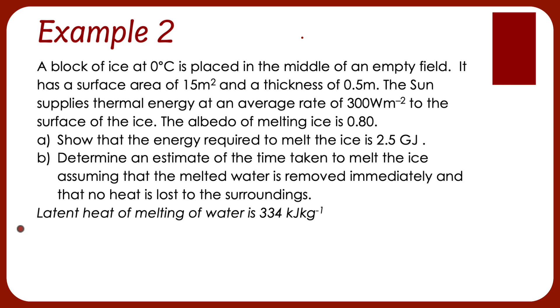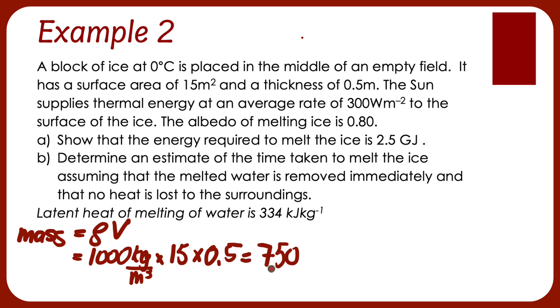Let's start with getting the mass of the ice that we have. That would be the density times the volume. We should know that the density is 1 gram per centimeter cubed or 1,000 kilograms per meter cubed. If I'm going to times that by the volume, that will be the area, which is 15, times the thickness, 0.5. That's going to give me 7,500 kilograms.